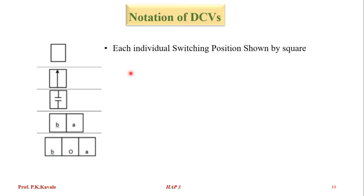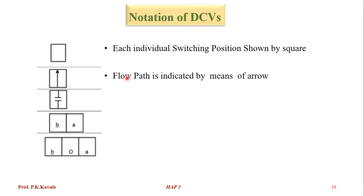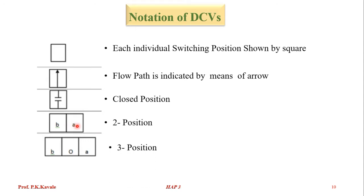Regarding notation for DCVs: each DCV or any valve can be represented by a square. Each individual switching position is shown by a square. Flow path is indicated by an arrow. A closed position means it does not allow flow from one port to another port. If there are two squares, it means two positions; if there are three squares, it means three positions.